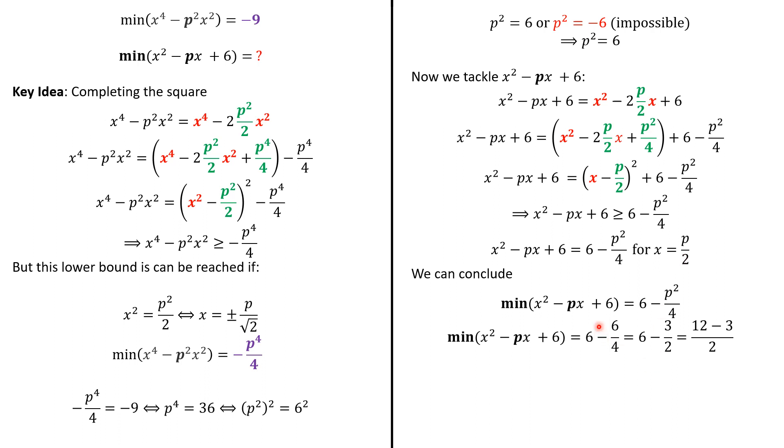So, we have 6 - 6/4. Simplifying by 2, we have 3/2. And then, pushing everything to the same denominator, we're going to have 12 - 3 which gives us that the minimum is 9/2.